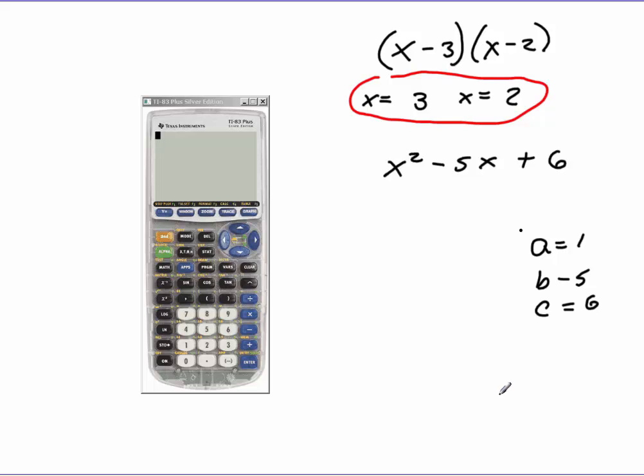This is Dr. Holt. I'm going to teach you how to program a TI-83, 84, or 84 silver edition to solve a quadratic equation. Now I've just created a simple quadratic equation. What I've done is I took x minus 3 and x minus 2 and multiplied those together, and that gives me x squared minus 5x plus 6. This one's going to be real easy if we can prove our results. So here your roots would be 3 and 2.